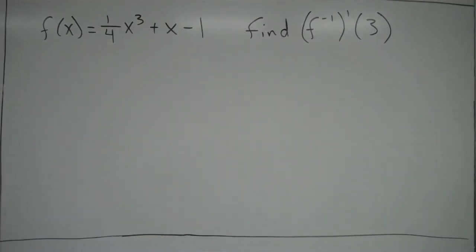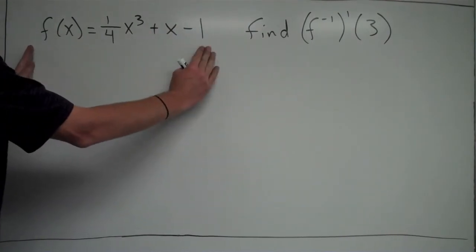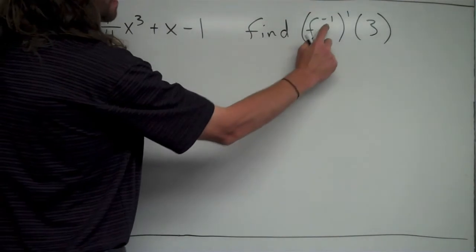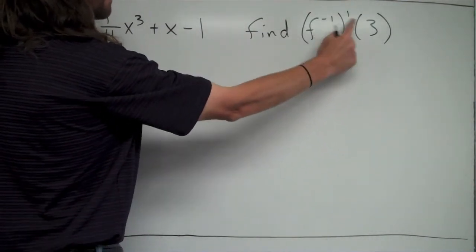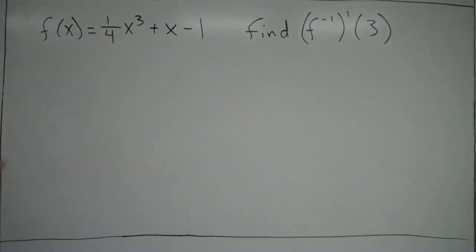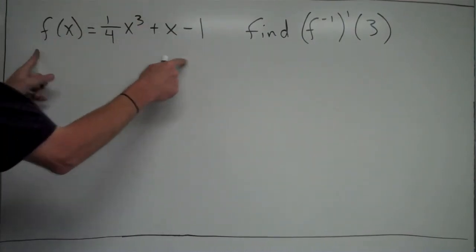Here's an example of a problem where you're given a function f of x, and you're asked to find the derivative of the inverse. f to the negative 1 means f inverse, and you can see prime. So you're trying to find f inverse prime of 3, the derivative of the inverse of f at 3. You're not trying to find the derivative of f, but the derivative of the inverse function of f.